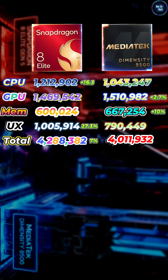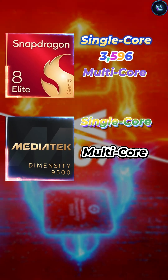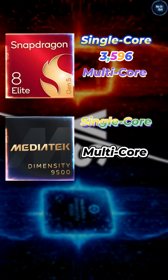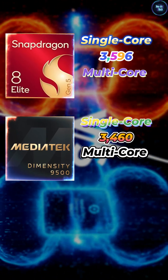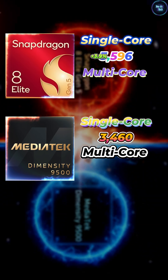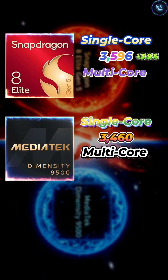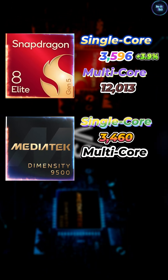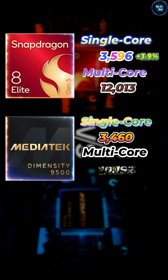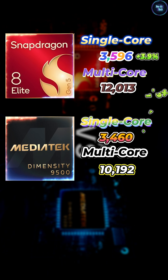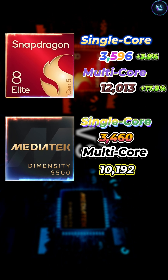Moving over to Geekbench 6: in the Single-Core, the Snapdragon achieved 3,596 versus 3,460 on the Dimensity — that's a plus 3.9 percent gain for Qualcomm. In the Multi-Core, the Snapdragon achieved 12,013 versus 10,192 — that's plus 17.9 percent gain for Qualcomm again.